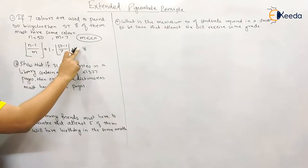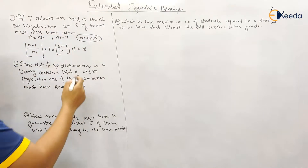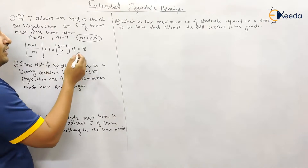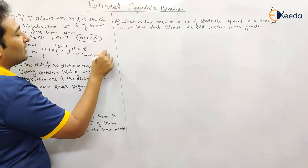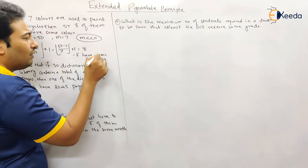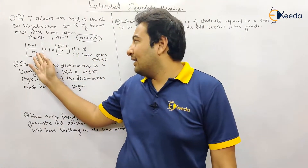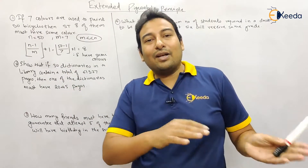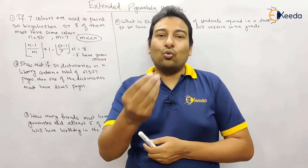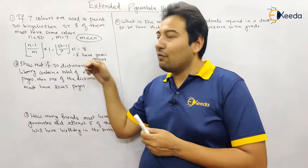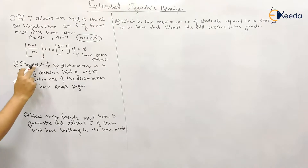So at least one pigeonhole contains 8 pigeons. The question asks to show that eight bicycles must have the same color — and indeed, eight of them must share the same color. With extended pigeonhole principle, you just apply the formula. Note: if the difference is one, the formula also works and gives an answer of two, like 13 students and 12 months means at least two share a birth month.